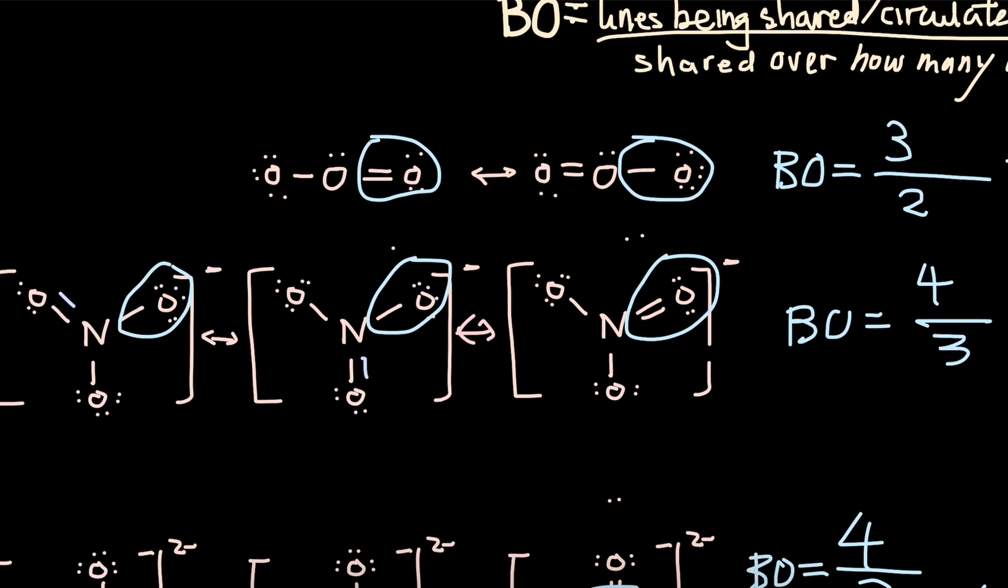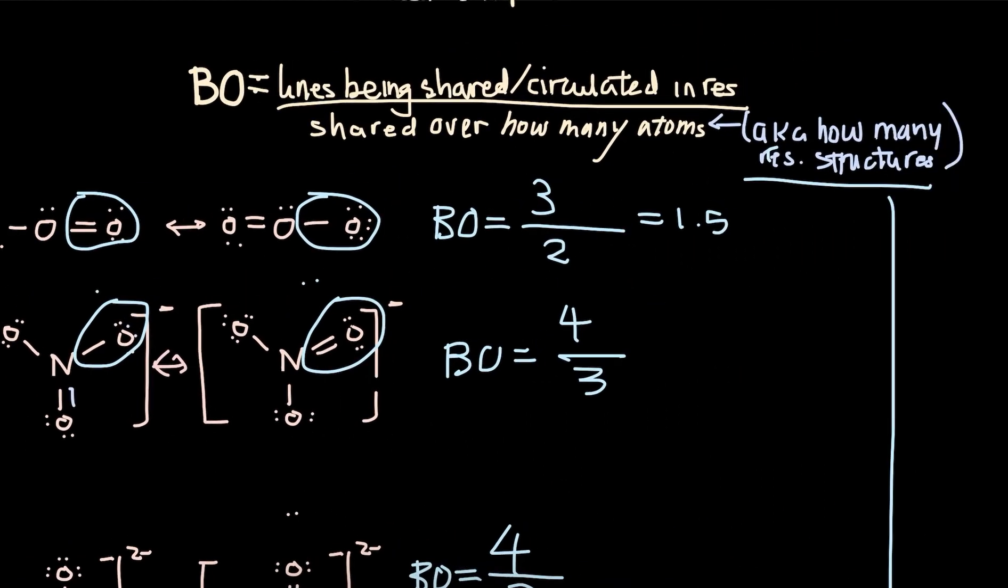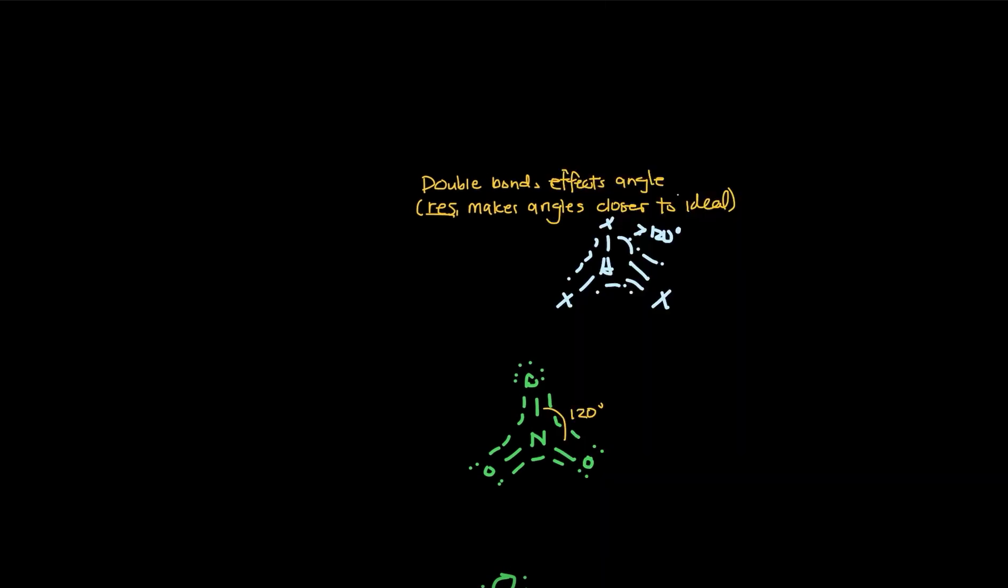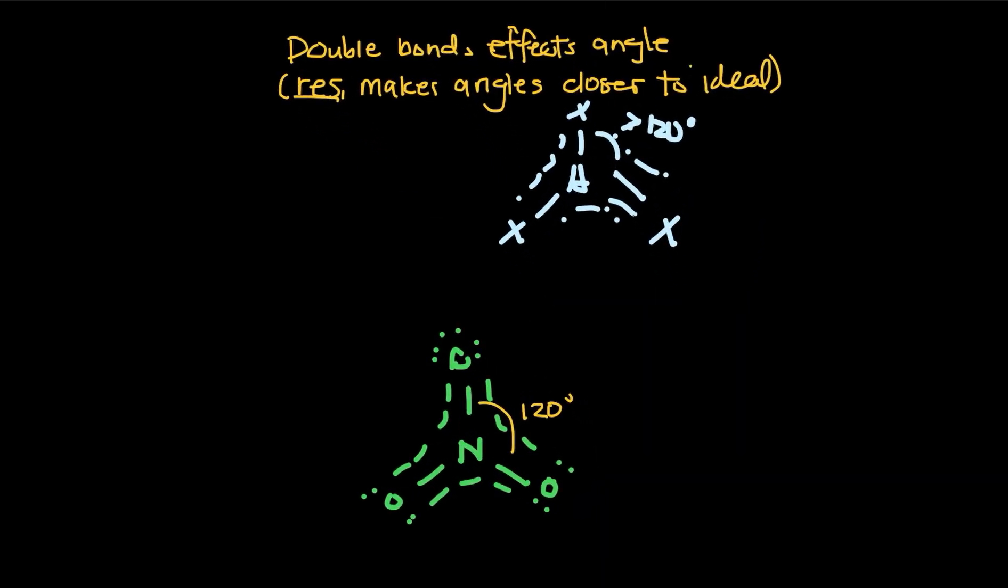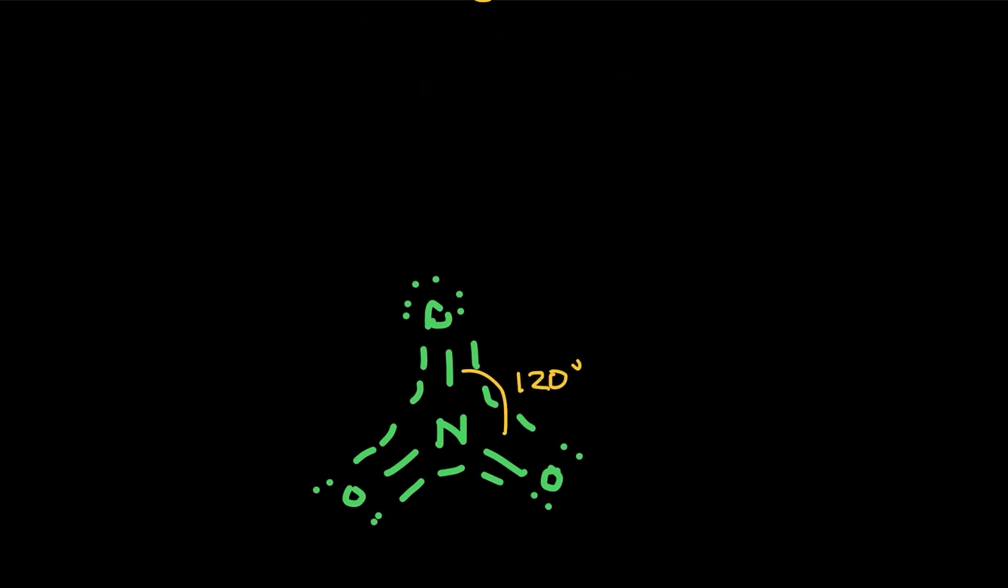But because there are three resonance structures, so the electron is equally delocalized over all three structures, the bond strength and bond length is the same, it's equally delocalized, which means, in fact, there will be no deviations if this were a resonance structure where all three are equally shared.